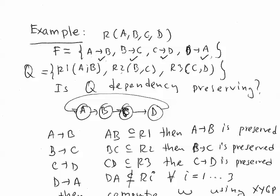Each table has a set of associated functional dependencies. Some dependencies, for example A determines B, can be enforced on R1. B determines C can be enforced in R3. But what about the last functional dependency, D implies A? If we are losing that dependency, we say this decomposition is not dependency preserving.